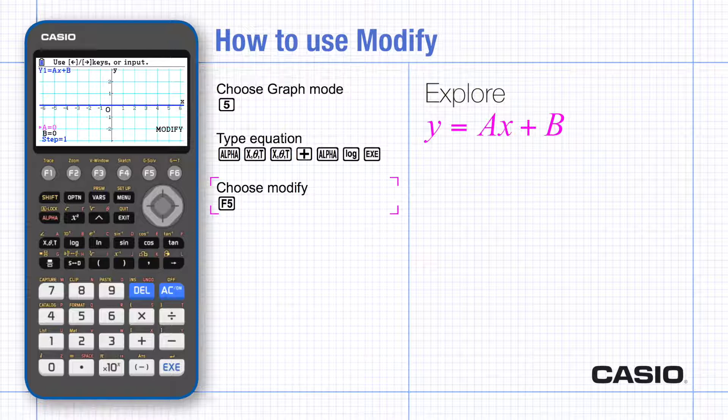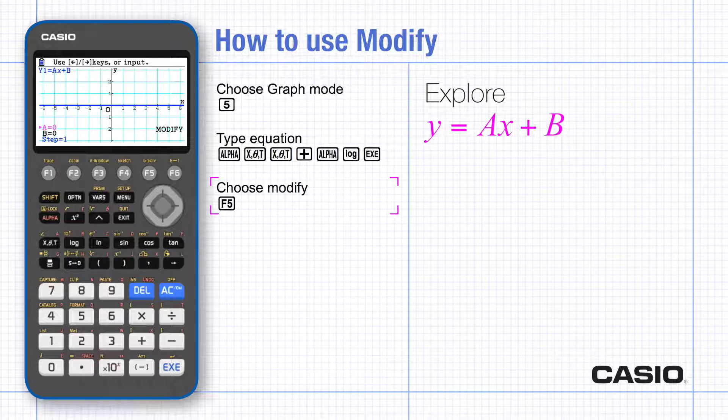The calculator uses the previous values for a and b. In my case it has drawn y equals zero x plus zero. Notice that the values of a and b are shown on the left of the display and the a is currently highlighted.